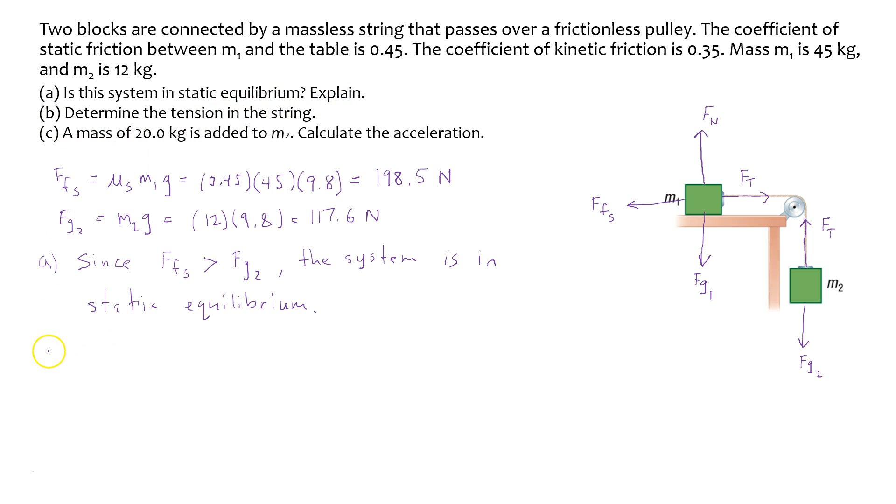So part B now is asking, determine the tension in the string. And so since we know that the blocks are not moving and block 2 is stationary, we can assume that Fg2 is going to equal Ft. So the tension here is going to equal Fg2 because there is no net force acting on M2.